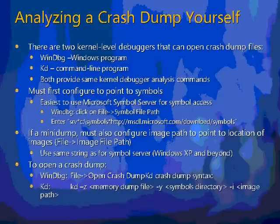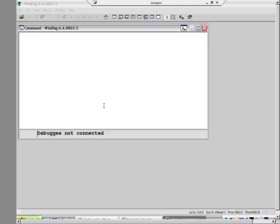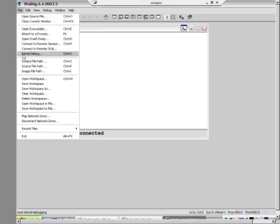The first thing you've got to do when you download and install the debugging tools is give it a pointer to the symbol files for the version of the OS that you're going to be wanting to analyze a crash from. I'm going to fire up the debugger, and the place where you configure the symbols is in the file menu under the symbol file path.